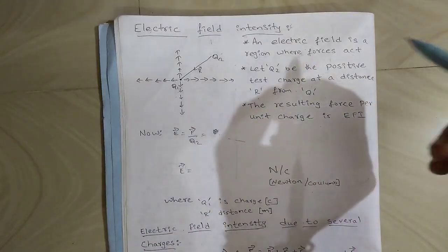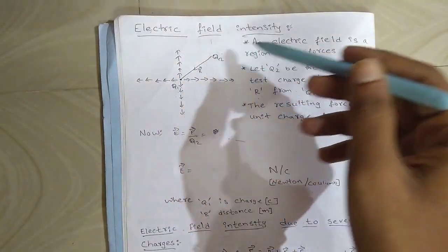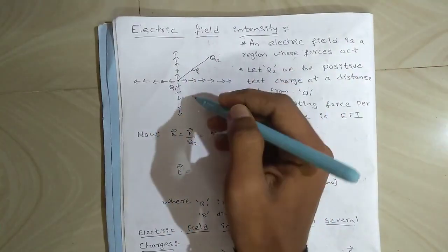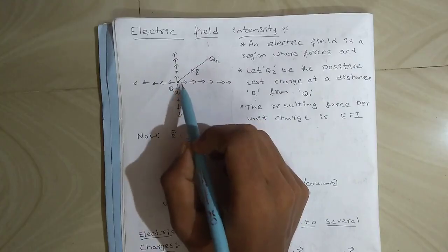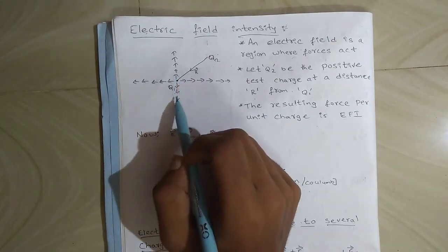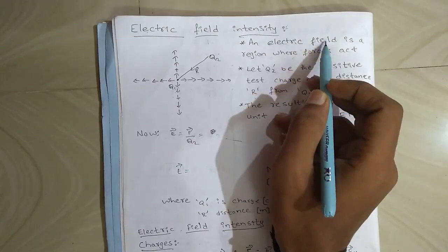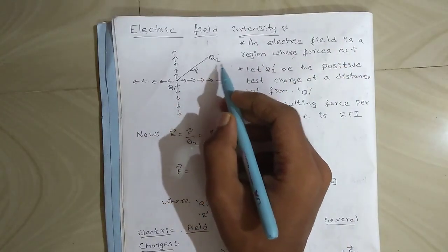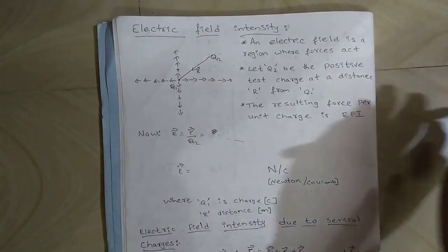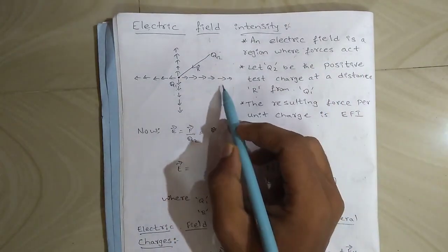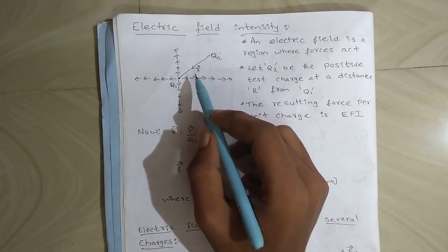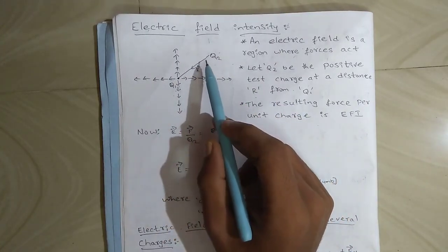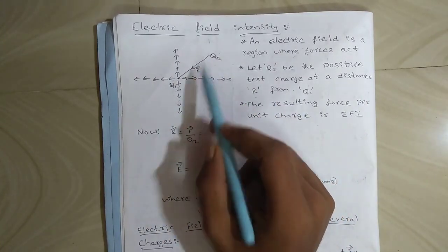In this video I will discuss about EFI, that is Electric Field Intensity. Consider a q1 test point charge and the force is acting in all four outward directions. An electric field is a region where forces act. Now consider q2 as a positive test charge, and the distance between q1 and q2 is r. We have to find EFI due to q2 on q1.